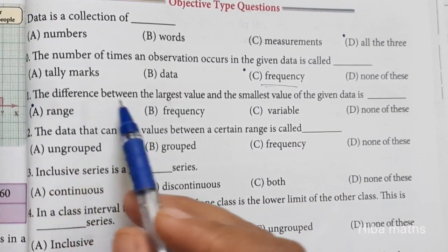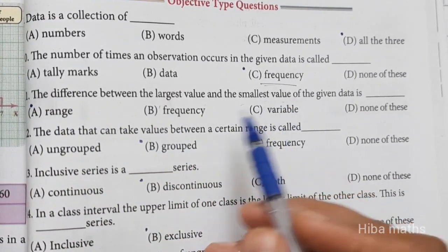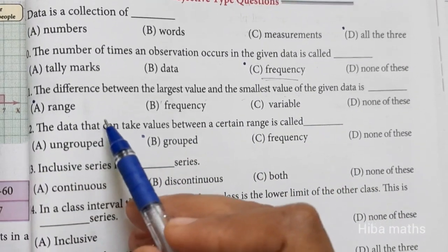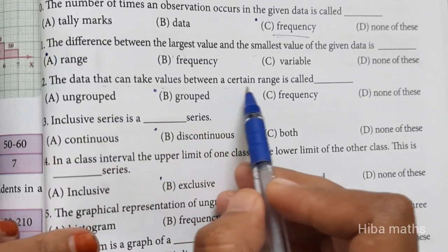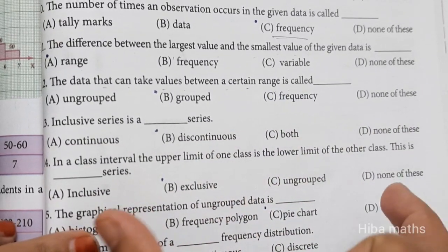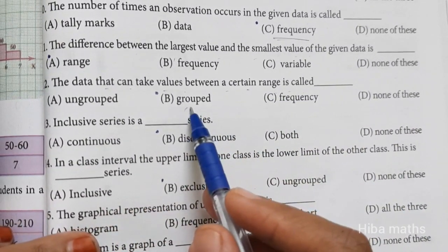The difference between largest value and smallest value is the range. Twelfth question: The data that can take the value between certain range, there are two ranges. Grouped data.